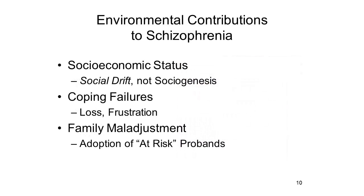What kinds of environmental stressors could make a contribution to schizophrenia? If genes are the easiest way to think about the diathesis for schizophrenia, then socioeconomic status, the stress of low SES, is perhaps the easiest way to think about the stress factors. Socioeconomic status is correlated with schizophrenia, but correlation is not causation. The best evidence suggests that the correlation between schizophrenia and socioeconomic status reflects social drift, not social genesis — it's not that low socioeconomic status causes schizophrenia, but rather that an episode of schizophrenia can cause an individual to drift to a lower level.